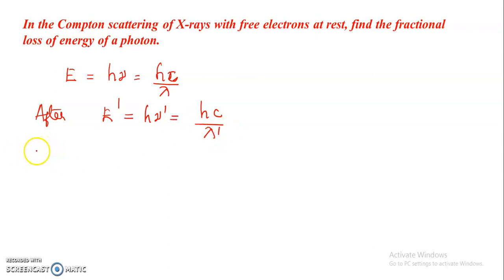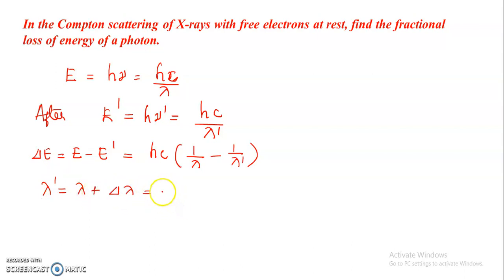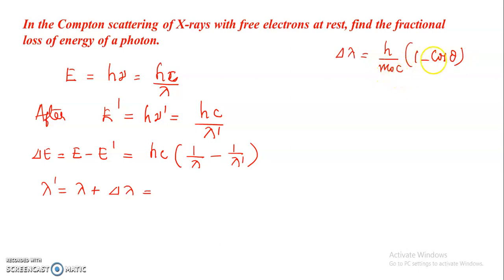So the loss in energy delta E equals E minus E dash, that is equal to HC into (1 by lambda minus 1 by lambda dash). We know that in the Compton scattering experiment, lambda dash equals lambda plus delta lambda, where delta lambda is the Compton shift and equals H by m0 C into (1 minus cos theta), where m0 is the rest mass of the electron and theta is the Compton angle of scattering.